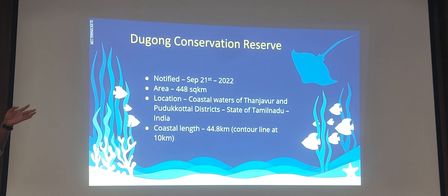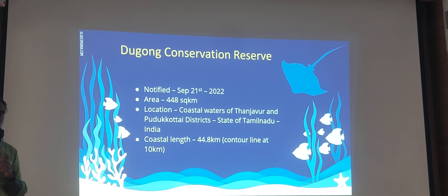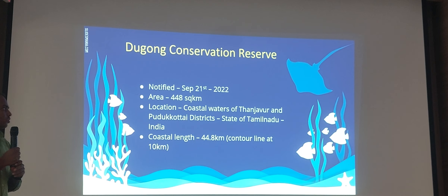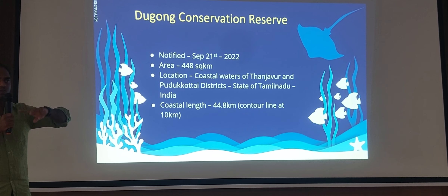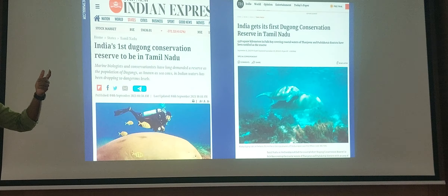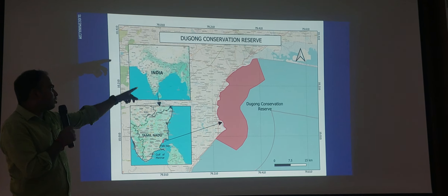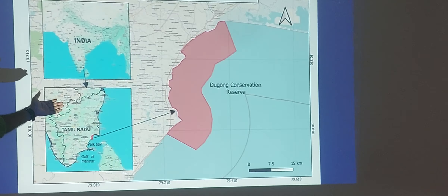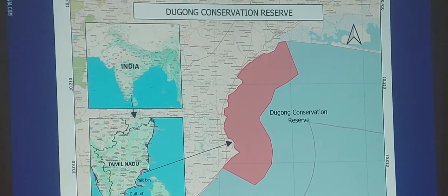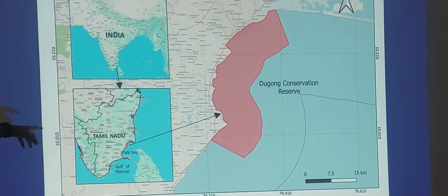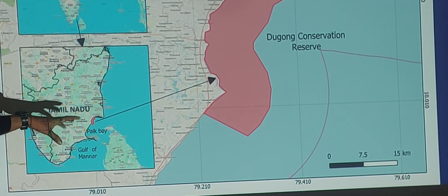Coming to the Dugong Conservation Reserve — it was notified in 2022, with an area of 4,440 square kilometers. It is located in Ramanathapuram district, with the neighboring district being Pudukkottai district. It has a total coastal length of 44.8 kilometers, and a contour line of 10 kilometers has been drawn, making the area 448 square kilometers. In India, it is located in Tamil Nadu in Palk Bay, adjacent to the Gulf of Mannar, which is already a marine national park.